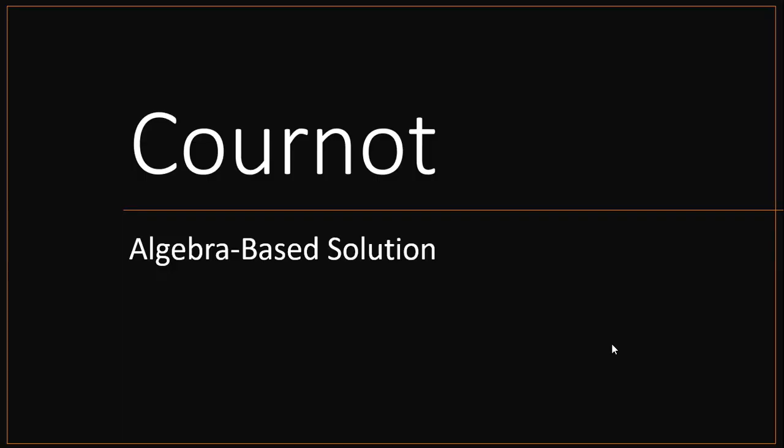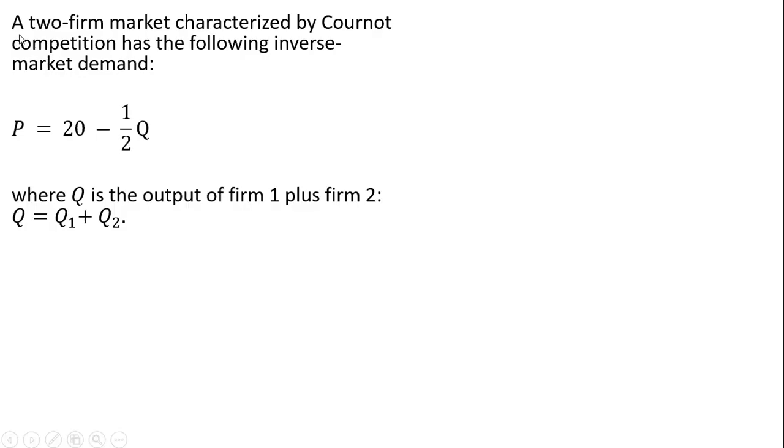Hello. In this video, we're going to solve a two-firm Cournot model using algebra. A two-firm market characterized by Cournot competition has the following inverse market demand: Price equals 20 minus 1 half Q, where Q is the output of firm 1 plus the output of firm 2. So the subscripts represent the output of the respective firm.